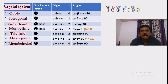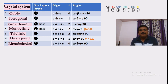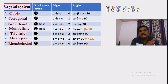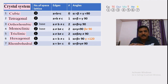For the angles: the first three systems — cubic, tetragonal, and orthorhombic — all have alpha = beta = gamma = 90°. In monoclinic, only beta is different and not equal to 90°. In triclinic, all angles are different: alpha ≠ beta ≠ gamma, and none equal 90°. In hexagonal, alpha = beta = 90° but gamma = 120°.